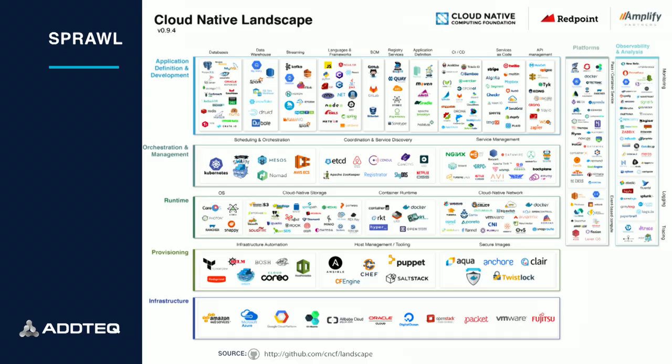Now let's talk about the DevOps landscape. This diagram looks really messy and crowded, and is intended to be so. It's called the cloud-native landscape. There is a cloud-native foundation, which is basically a collection of a lot of open-source projects, as well as different vendors building products around the cloud-native landscape. This diagram keeps getting constantly updated — there is a GitHub link at the bottom — and anytime any organization or project joins, the diagram gets updated.